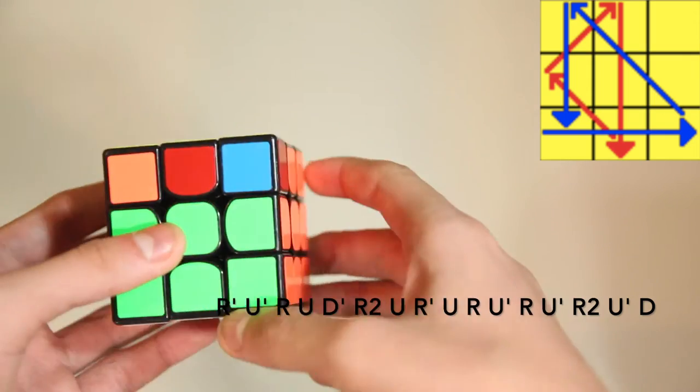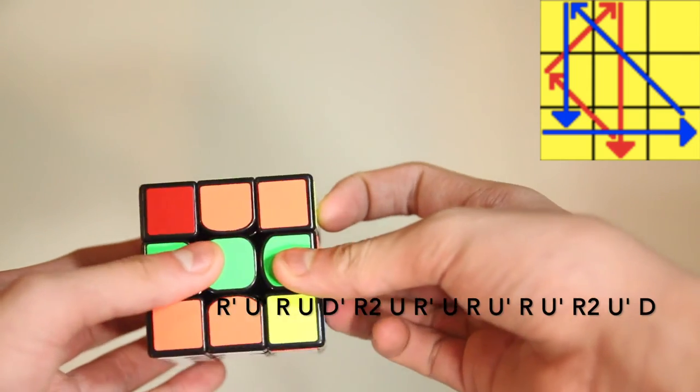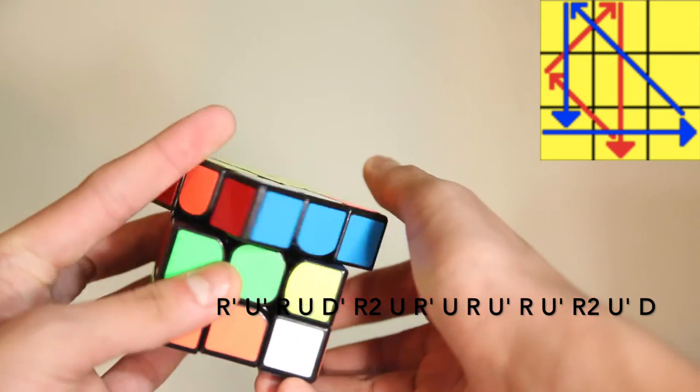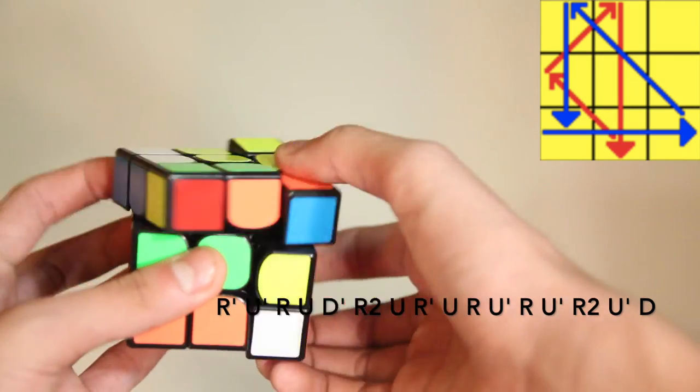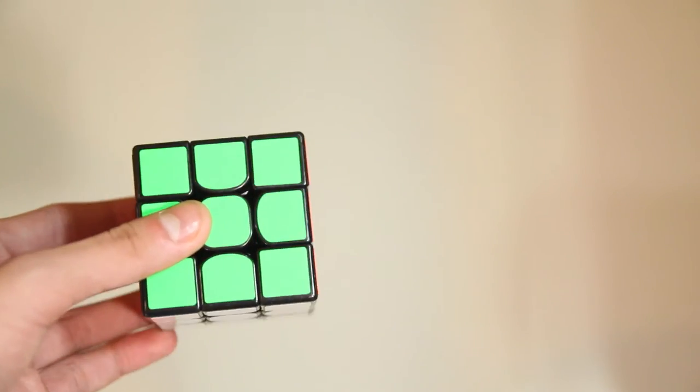One more time. So again, R' U' R. Same time. And then re-grip, R2 U. Like that. Now let's look at it, execute it quickly.